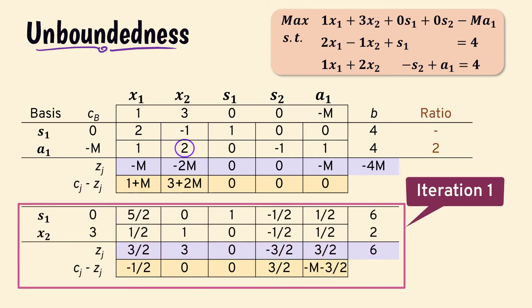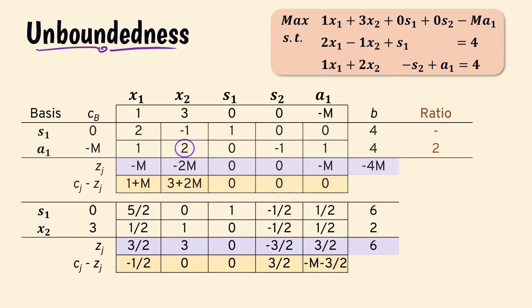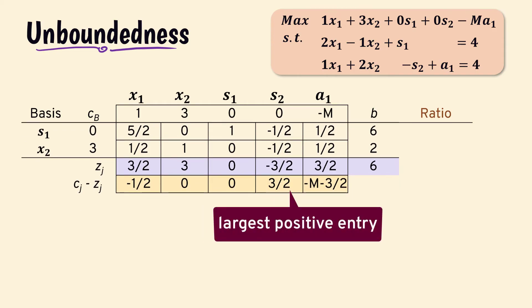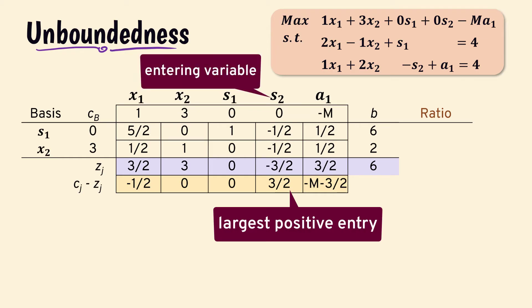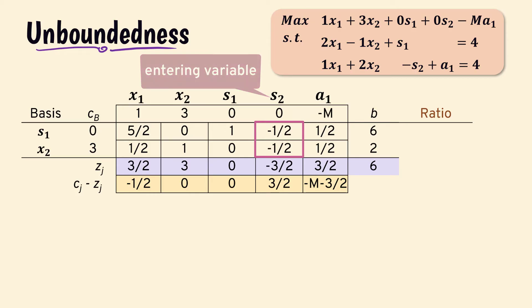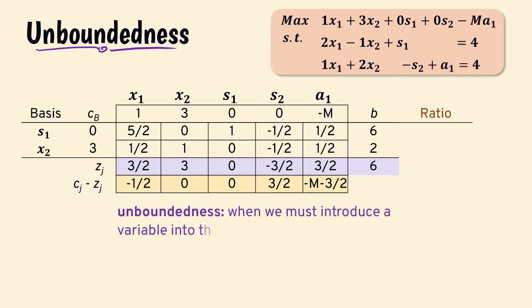At the first iteration, we have the following result. In the net evaluation row, the only positive entry is 3/2, suggesting that s2 should enter the basis next. But none of the variables could leave the basis because the column values are all non-positive. Hence, we have an unbounded problem. In essence, s2 can increase indefinitely without violating any constraint, and consequently the objective function can increase indefinitely as well. From the tableau perspective, unboundedness occurs when we must introduce a variable that has no positive entry in its column.